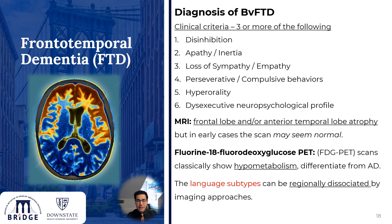The FDG PET scan classically shows hypometabolism in the frontal and temporal lobes, which can differentiate it from Alzheimer's disease, which classically shows parietal and temporal hypometabolism. The language subtypes can be regionally dissociated by imaging: the non-fluent variant affects more the frontal side, while the semantic variant affects more the posterior parts of the temporal lobe.